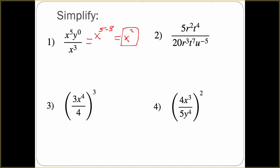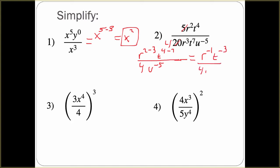For the next one, we have 5r squared t to the fourth over 20r cubed t to the seventh u to the negative fifth. For any of the same base, we're going to subtract the exponents. Any negative exponents we have at the beginning, we can move around. We have 5 over 20 — 5 goes into 20 four times, so now we have 4 in the denominator. We have r squared over r cubed, so 2 minus 3 for our exponents. We have t to the fourth over t to the seventh, so subtract 7. And we still have u to the negative fifth in the denominator. This gives us r to the negative first, t to the negative third, all over 4u to the negative fifth.